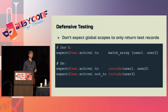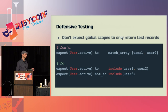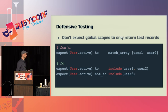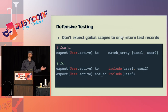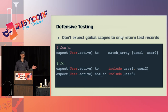Similarly, don't expect global scopes to only return the records you created in your test. Using match_array on an active scope asserts that the result set has exactly those users, so if another active user was created by another test or fixture, this will fail. What we prefer instead is to expect inclusion and exclusion — this lets us assert what we want without a reliance on a super clean database when it runs.